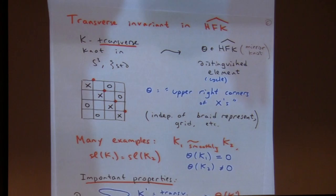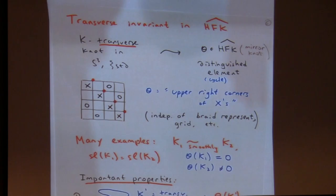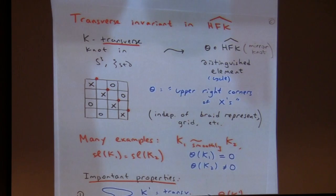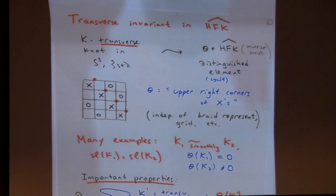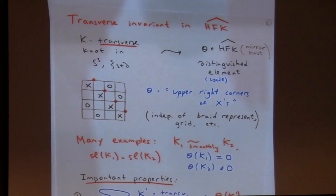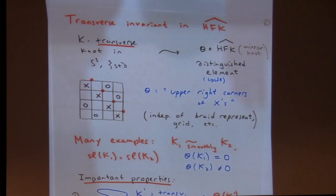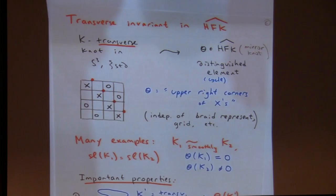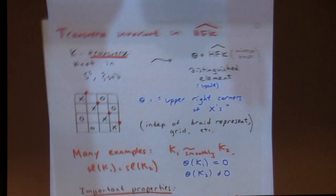Combinatorially it's easy to say what it is: you look at the grid of X's and O's encoding your transverse knot, and you look at a particular generator given by the upper right corners of X's — just the diagonal red dots. It's easy to see this is a cycle, because the X's tell you that you cannot build any empty rectangles contributing to differentials from theta. So it defines an element in the homology.